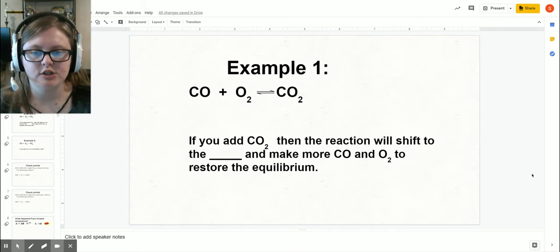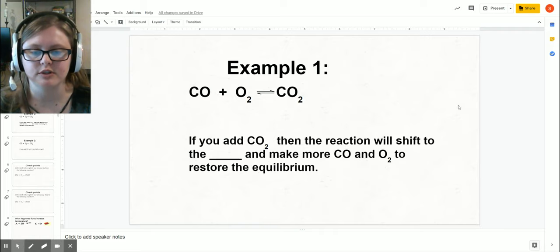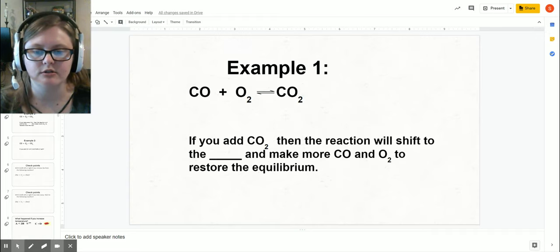When you have CO (carbon monoxide) combining with O2 (oxygen gas) to create CO2, you can see this double arrow here shows it's a reversible reaction. If you add CO2, then the reaction will shift to the left and make more CO and O2 to restore the equilibrium.